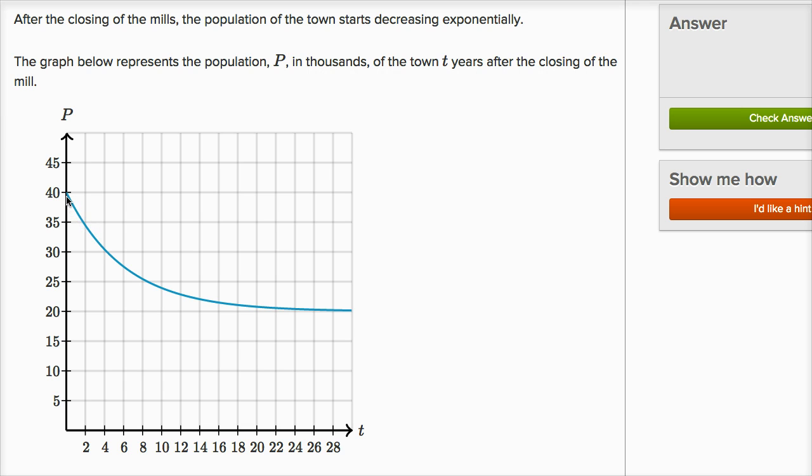So it looks like the population starts at 40,000. It's decreasing exponentially. It looks like over time, the population is approaching 20,000 people. So what is the question here?